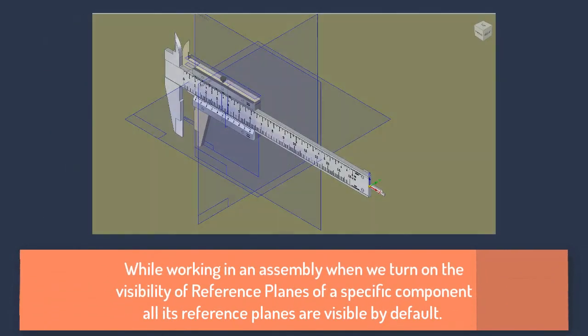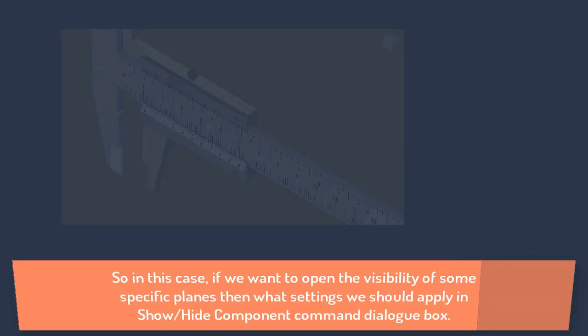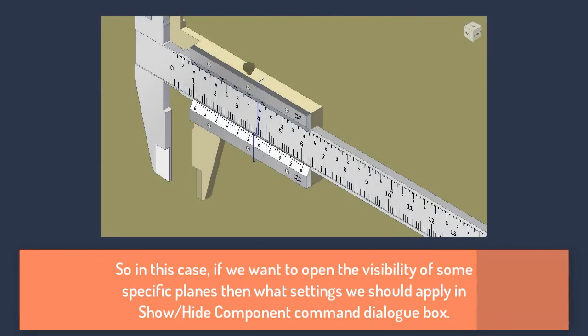While working in an assembly, when we turn on the visibility of reference planes of a specific component, all its reference planes are visible by default. So in this case, if we want to open the visibility of some specific planes, then what settings we should apply in the Show/Hide component command dialog box.